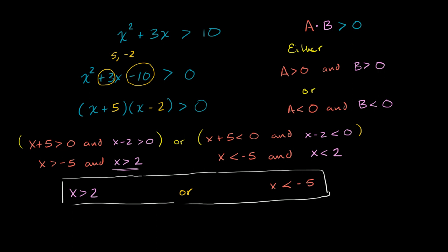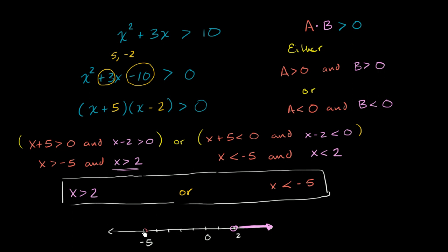We can plot the solution set on a number line. At 2, we put an open circle since it's strictly greater than, and shade to the right. At negative 5, we put an open circle and shade to the left. For example, negative 6 works: negative 6 squared is 36, plus 3 times negative 6 is negative 18, giving 18 which is greater than 10. And x equals 3 also works: 9 plus 9 is 18, which is greater than 10.